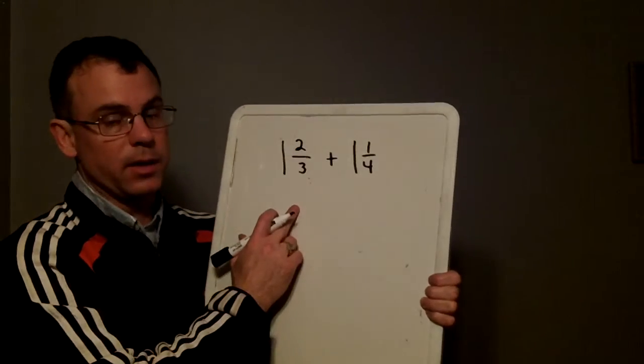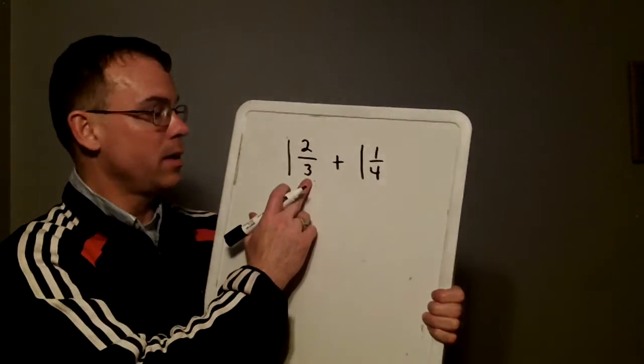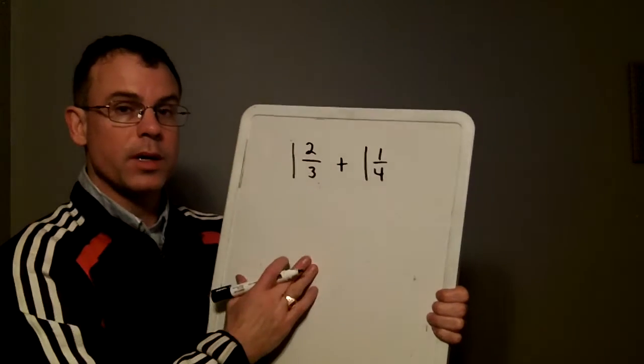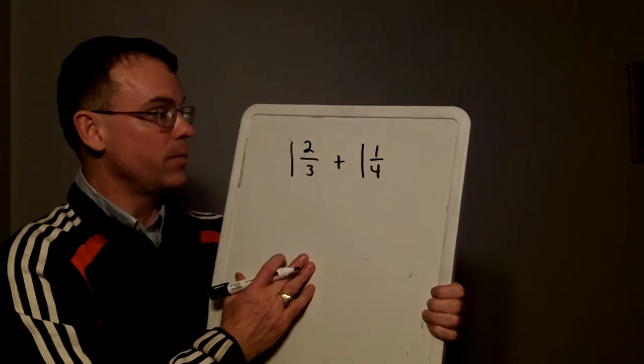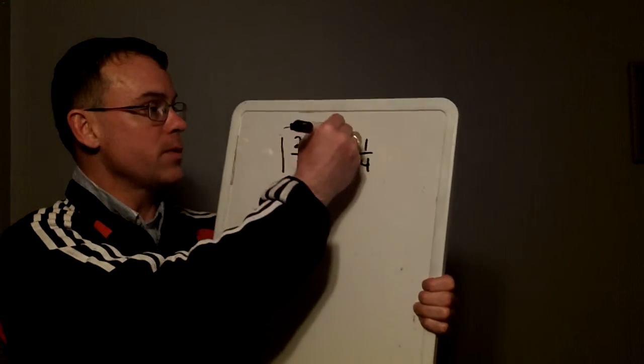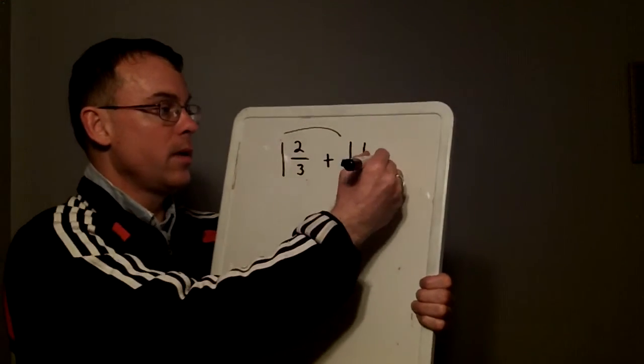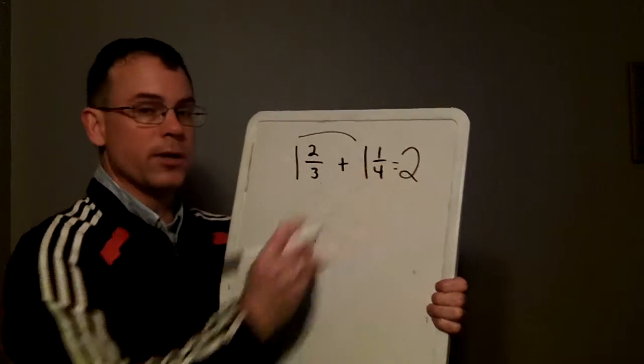Remember, to add things, they need to be the same type. These are thirds, these are quarters, clearly we'll need to make a change. There's different approaches to this question. I like to take the whole numbers, one and one, and add those together before I do anything else.